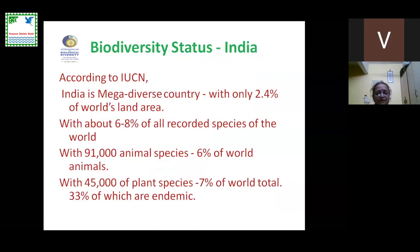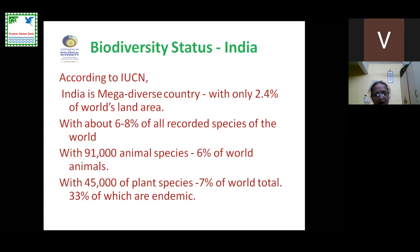When we talk about the biodiversity status of India, that also has to be understood so that we know how precious these regions are for us. According to IUCN, India is a mega diverse country with mega endemic regions. With only 2.4 percent of the world's land area, we have abundance and variety of species — about 6 to 8 percent of all recorded species of the world, with 91,000 animal species (6 percent of world animals), 45,000 plant species (7 percent of world total), and out of which 33 percent are endemic in nature.